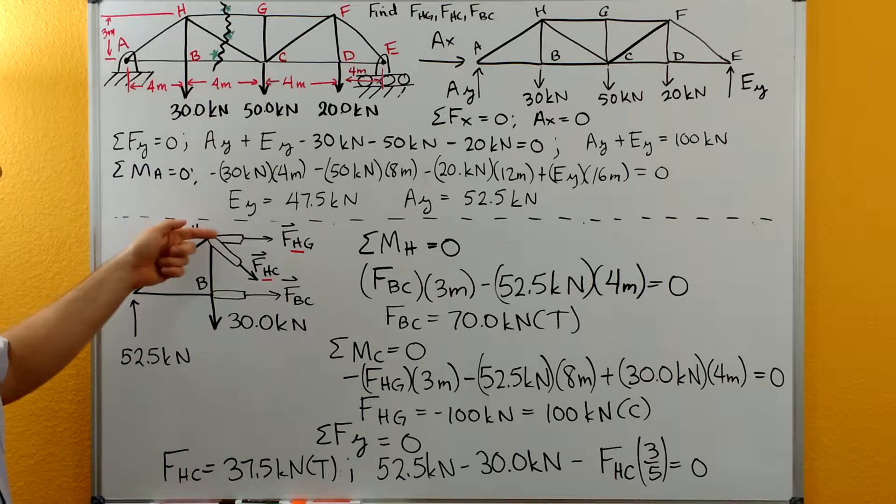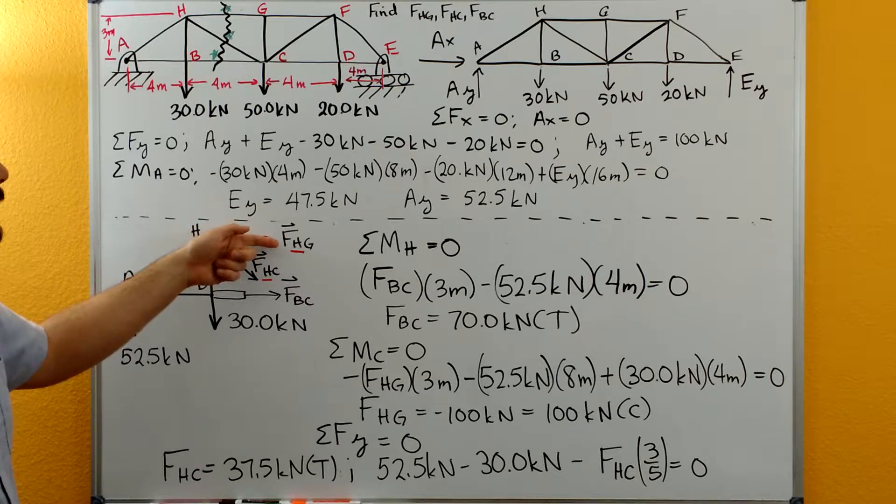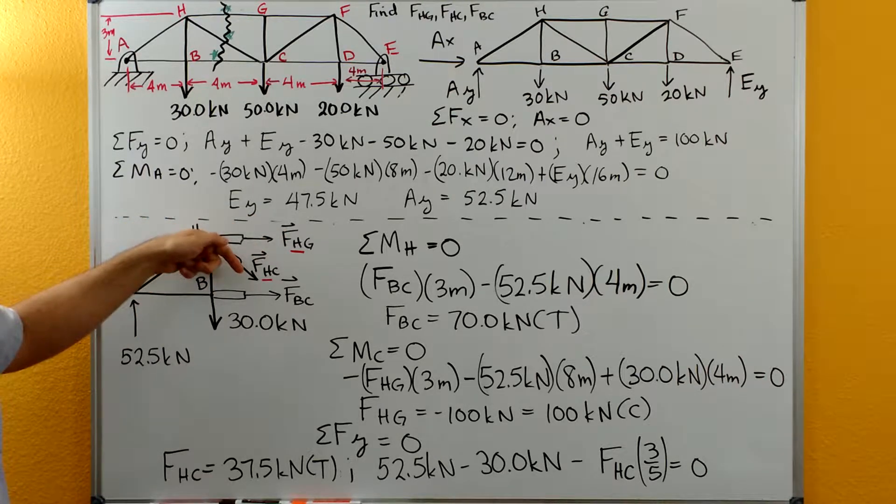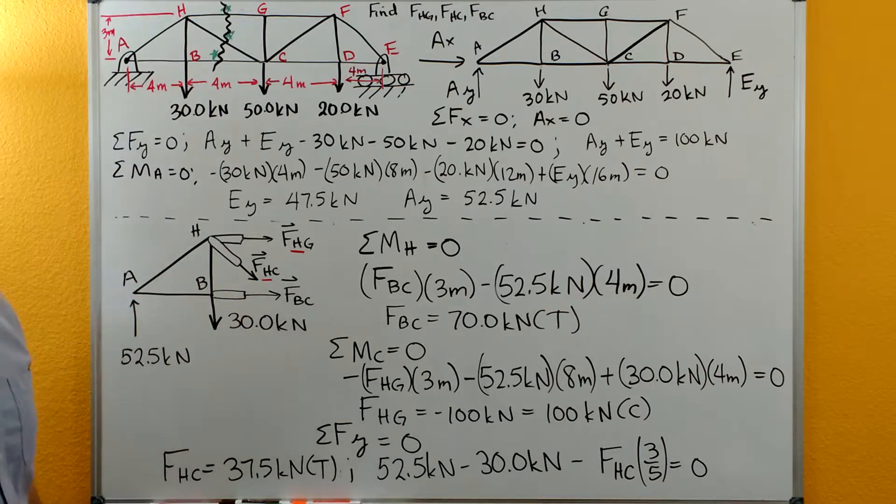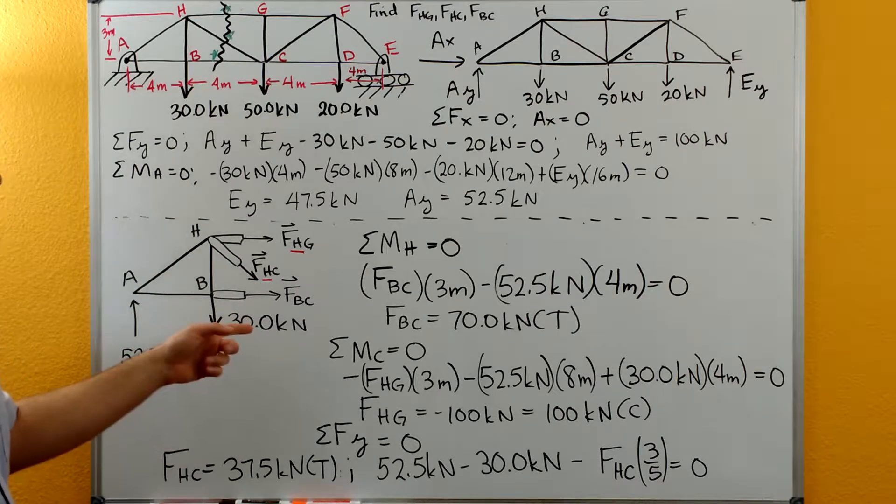We cut through HG, so we need to show FHG. We cut through HC, so we need to show the force there. And we cut through BC, so we'll show the force there.